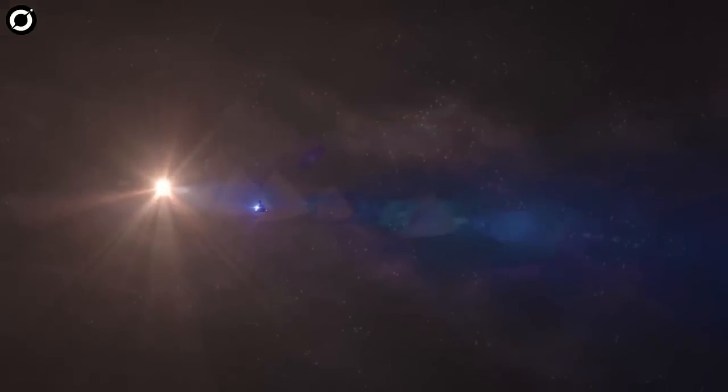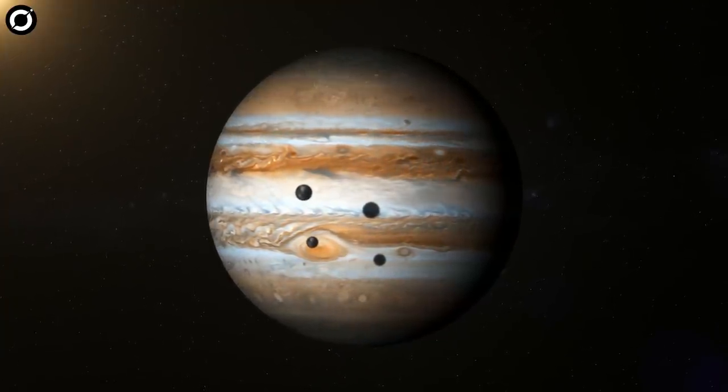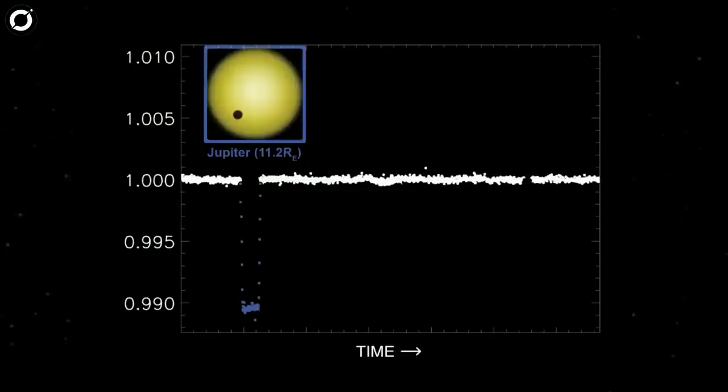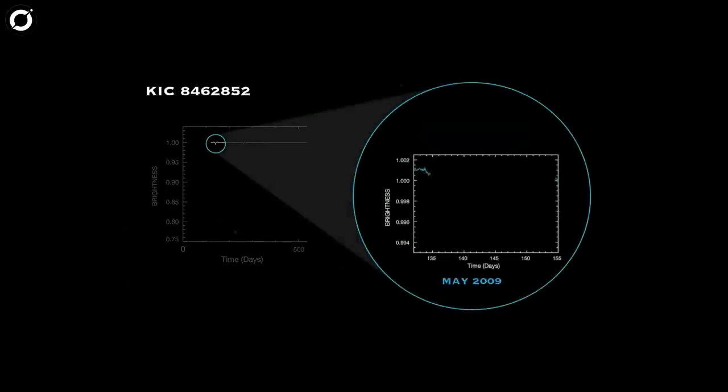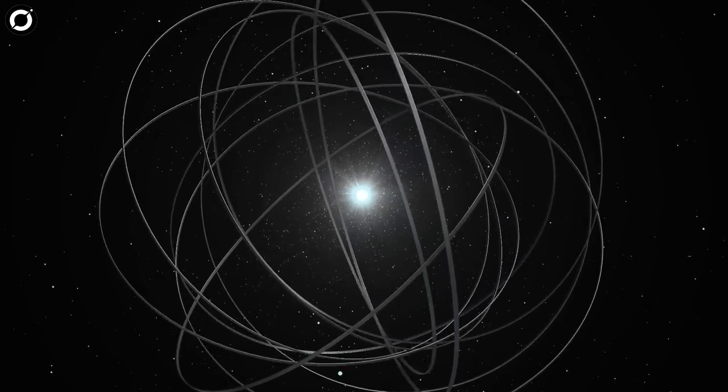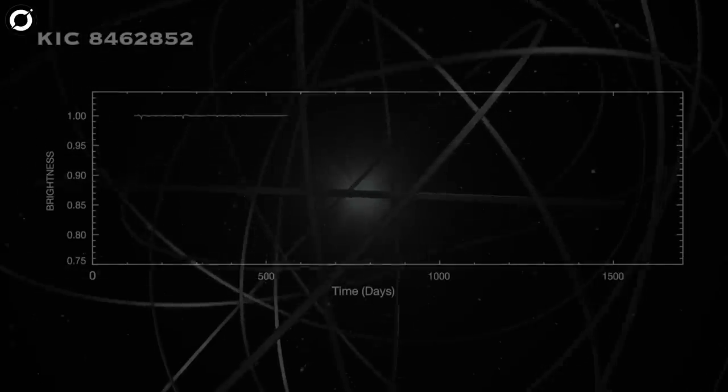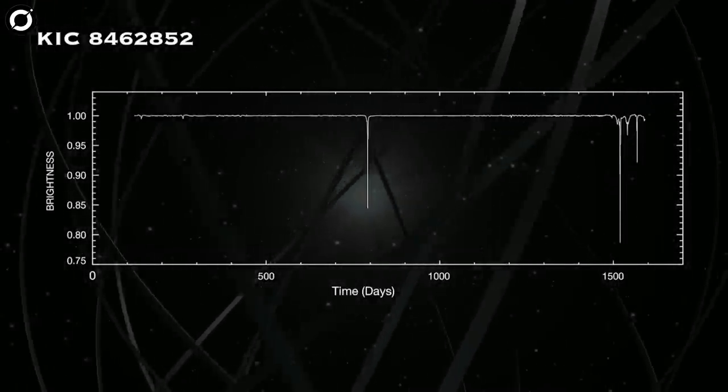However, this star's flux dims by a tremendous amount without any regularly repeating signals. Yes, they are not consistent. Now planets do not get much bigger than Jupiter. When Jupiter passes in front of our sun it makes a one percent drop in the sun's brightness. However, this star's brightness varied by an unprecedented 22 percent. That's a massive object orbiting it, and its sheer monstrosity tells us that it cannot be a planet. And what's even more startling is the speed and randomness of its flickering.